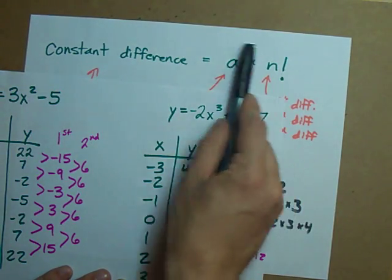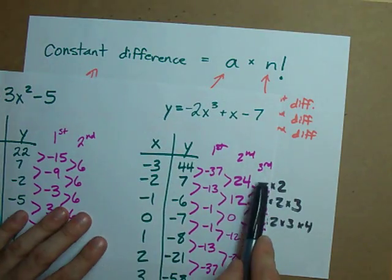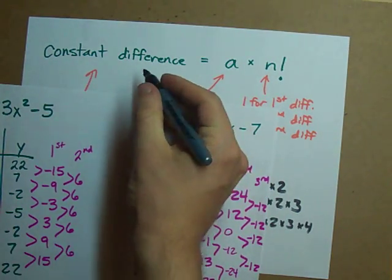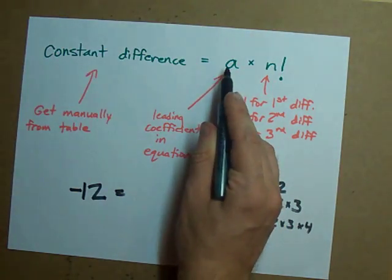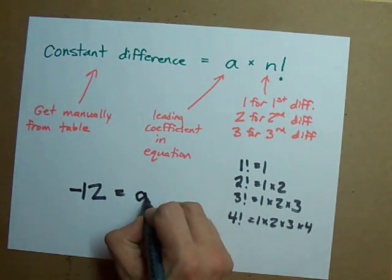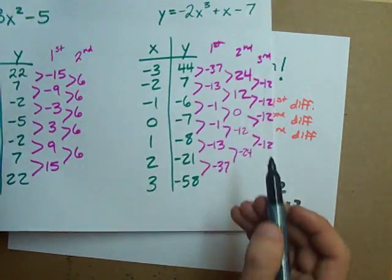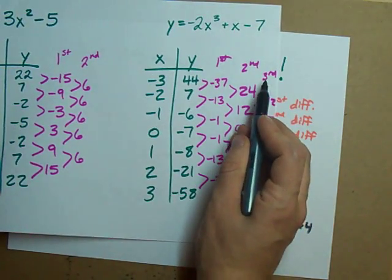Plug it into this equation. Plug in the differences that you get. I got negative 12. Negative 12 equals whatever that coefficient will turn out to be times the degree of the equation, 3 factorial.